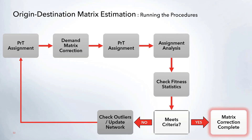To summarize the workflow: first run your initial PRT assignment, then run the Demand Matrix Correction, then rerun the PRT assignment so the new demand is added to the network. Perform the Assignment Analysis to bring up the chart and check fitness statistics. If the results still don't meet your criteria, check outliers, make any network updates, and rerun the assignment and demand matrix correction. Keep iterating until your criteria is met. Once your assignment results look good, your matrix correction is complete — you can turn off the demand matrix correction and continue running just the PRT assignment on its own.